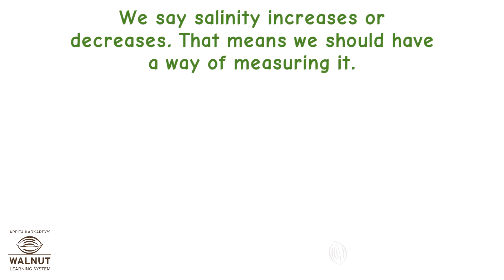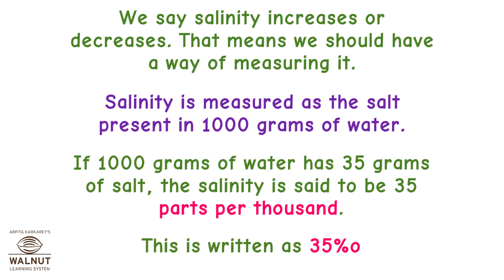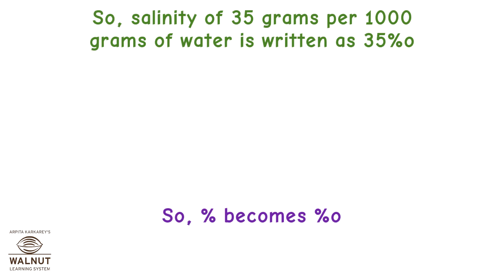We say salinity increases or decreases, so we should have a way of measuring it. Salinity is measured as the salt present in 1000 grams of water. If 1000 grams of water has 35 grams of salt, the salinity is said to be 35 parts per 1000. So salinity of 35 grams per 1000 grams of water is written with a special notation.